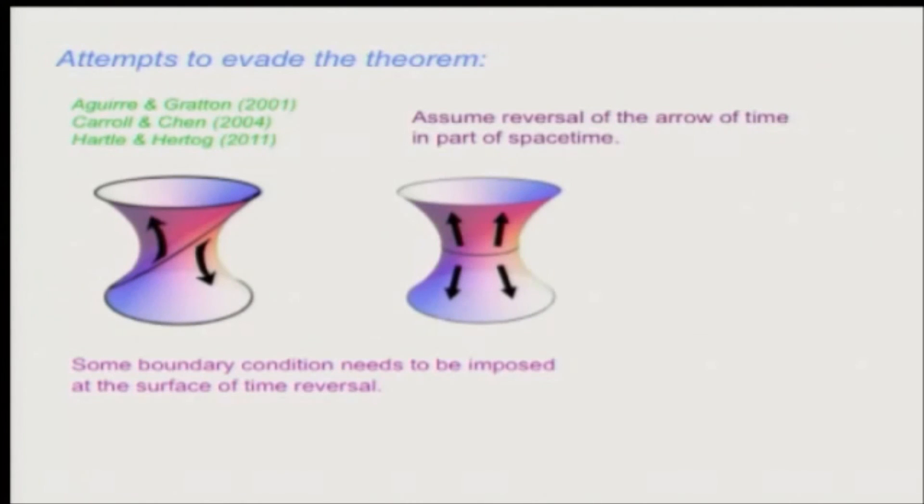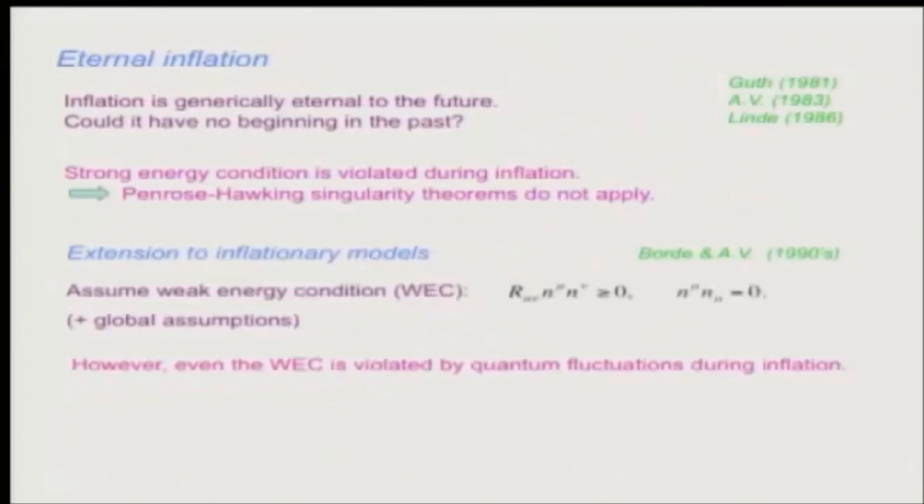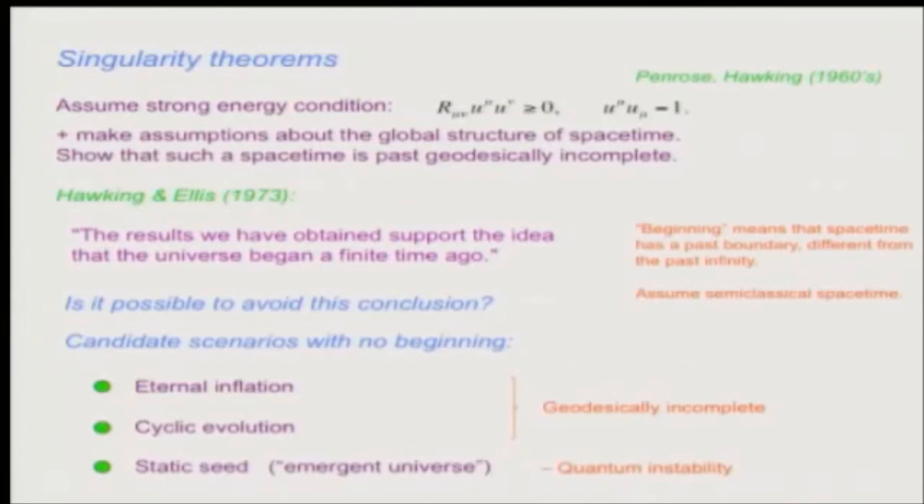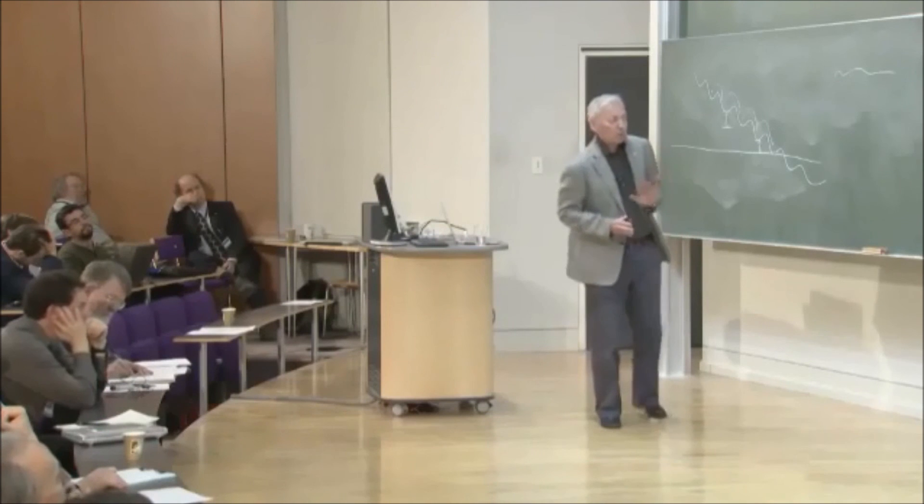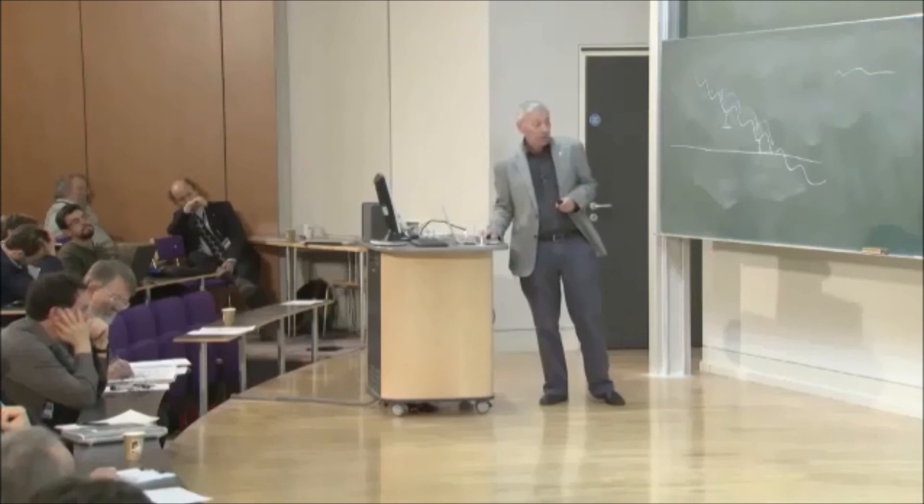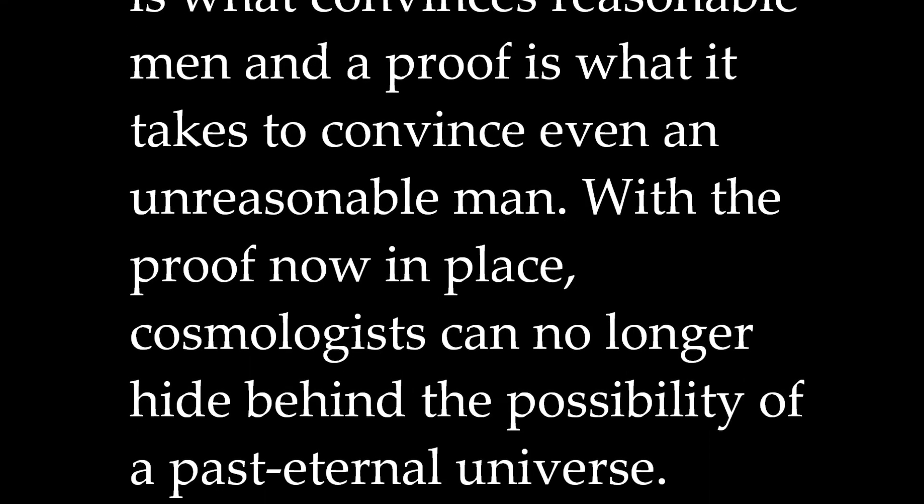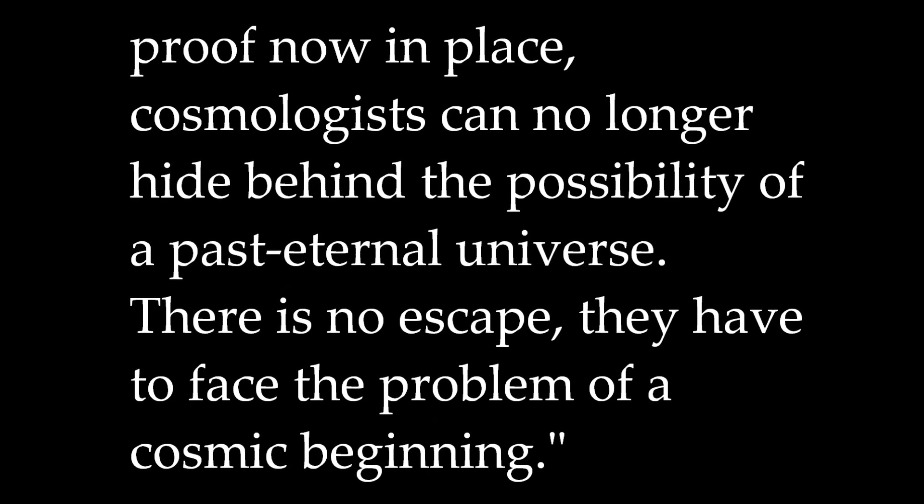And okay, this avoids, of course, the conclusion of the theorem, but here you have to impose some boundary condition at the surface where the arrow of time is reversed. And for me, this amounts pretty much to a beginning. So I think I'm done with my list of things here with eternal inflation. So I think the conclusion is that inflationary universe, even though it is eternal to the future, should have some sort of a beginning in the past.